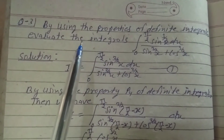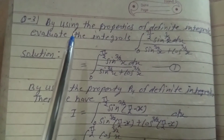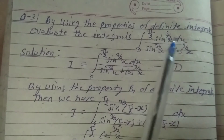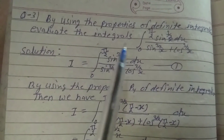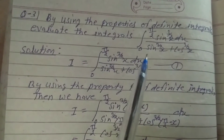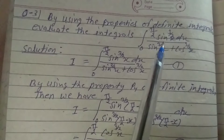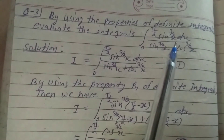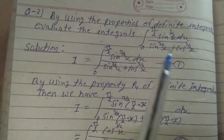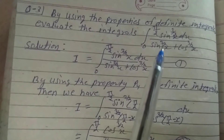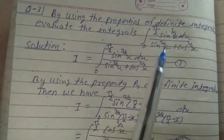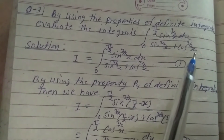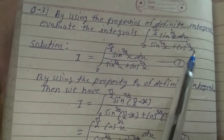Explain question number 3 of exercise 7.11 by using the property of definite integrals. Evaluate the integral from 0 to π/2 of sin^(3/2)(x) dx divided by sin^(3/2)(x) plus cos^(3/2)(x) dx.